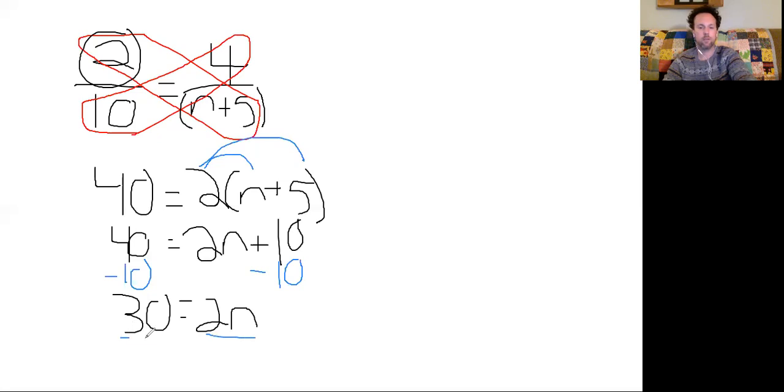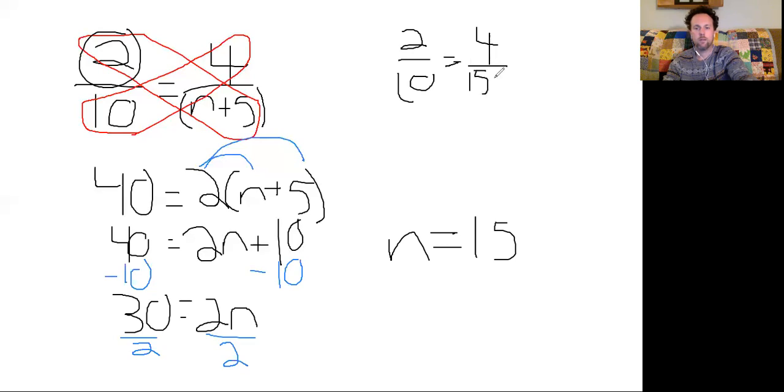So then I go to multiply and divide. Divide both sides by 2. And then I'm going to bring my answer over here to the side. n equals 30 divided by 2 is 15. So if I plug this in, I'm left with 2 over 10 equals 4 over 15 plus 5, which equals 4 over 20. And if I reduce both these, these are both equivalent fractions. 2 over 10, 4 over 20. They both reduce to 1 fifth. So that works out.